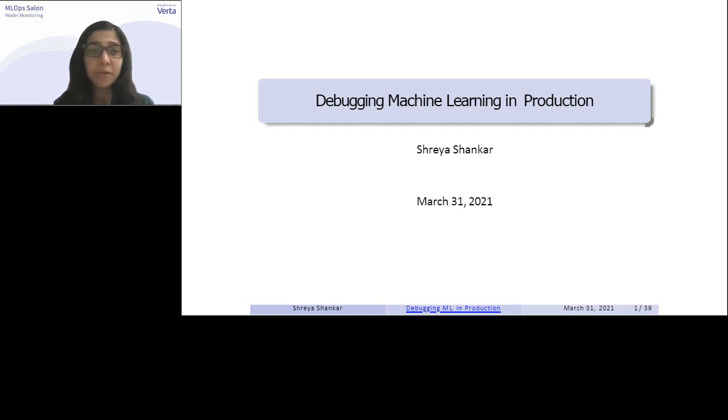Shreya will draw upon her extensive experience building production ML and talk about a high-level overview of modern ML infrastructure, criteria for promoting models to production, case studies of bugs encountered when clients interact with live ML predictions, and the challenges in solving these issues. Do join us after Shreya's talk for the panel, where we will all be talking about model monitoring. Please put your questions for Shreya on the Q&A. She'll be answering them on our Virta Slack channel. With that, I will turn it over to you.